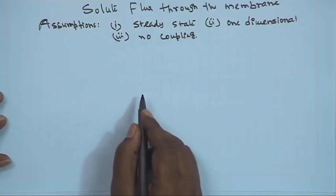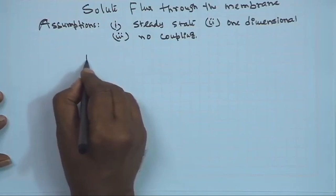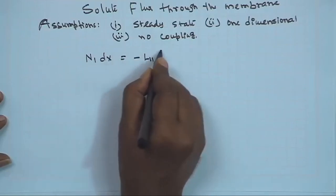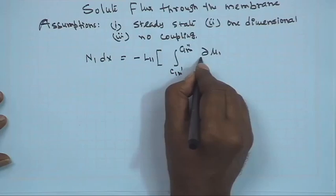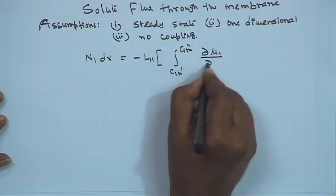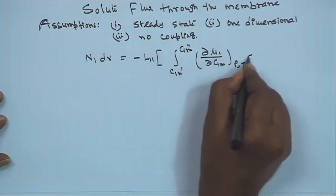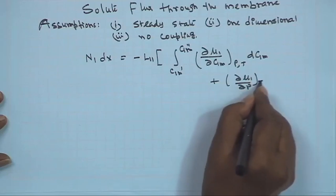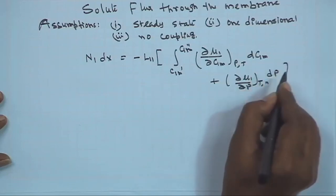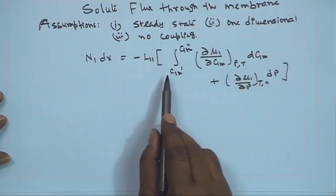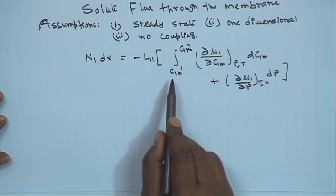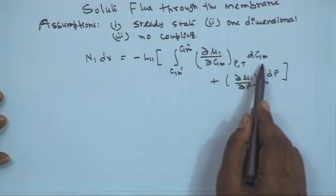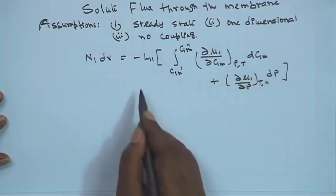If we now do that, the previous equation for the solute flux can be integrated. We have already done this earlier: N1 dx equals minus L11 integrated from C1m prime to C1m double prime of (del mu1 / del C1m) at constant pressure and temperature dC1m, plus (del mu1 / del p) at constant temperature times dp. We have already derived the governing equations of solute and solvent. We have the gradient of C1m, i.e., dC1m/dx, and dp/dx, and we multiply both sides by dx and integrate.